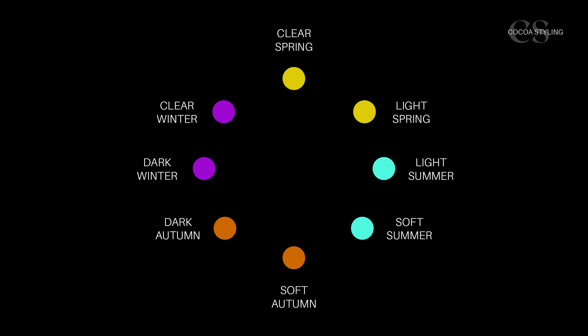Dark autumn versus clear spring is the question I get the most, but this also happens with other types, because with three color dimensions the default is one of them sitting in the middle — and that feature can lean a bit towards either side. That is what causes confusion between types. It happens with sister types, family types, and cousin types. Let's remember that the color seasons create a circle, which makes it easier to visualize those groups.